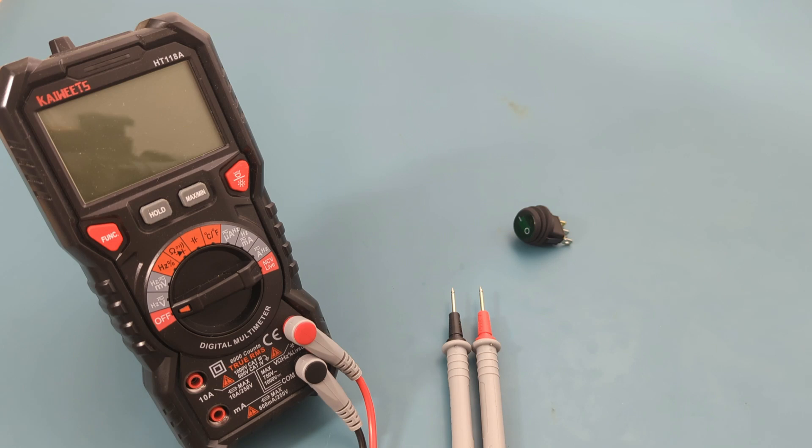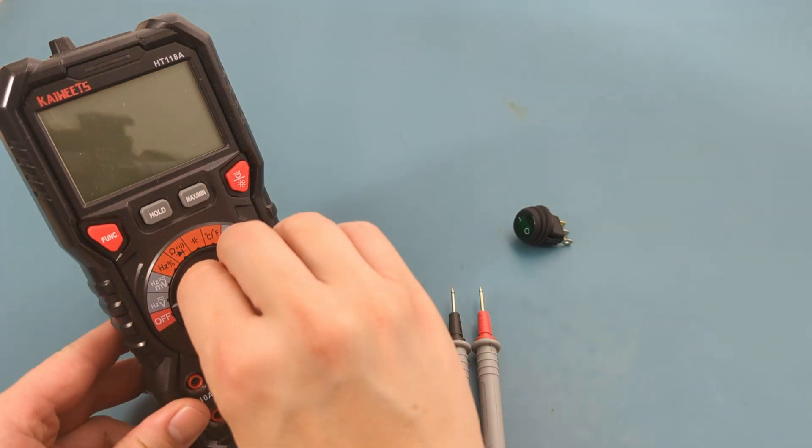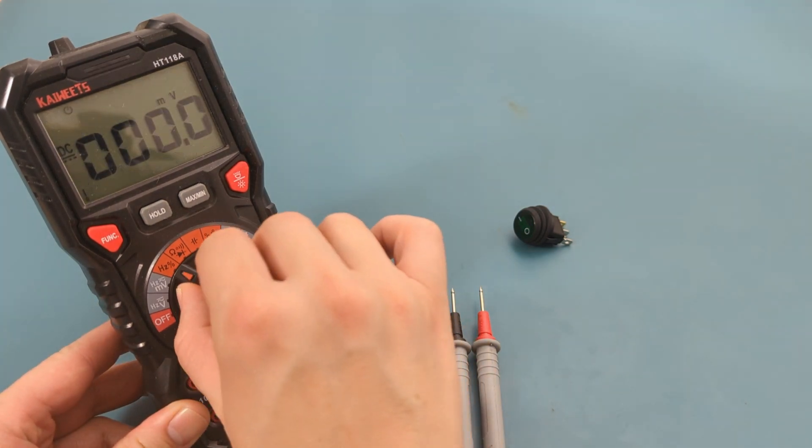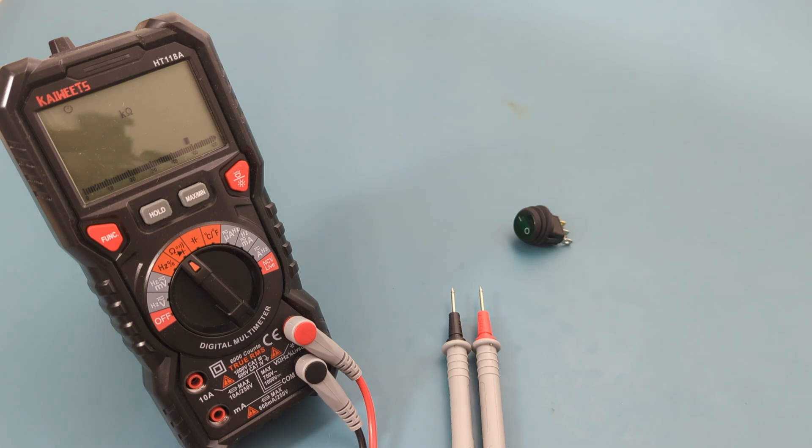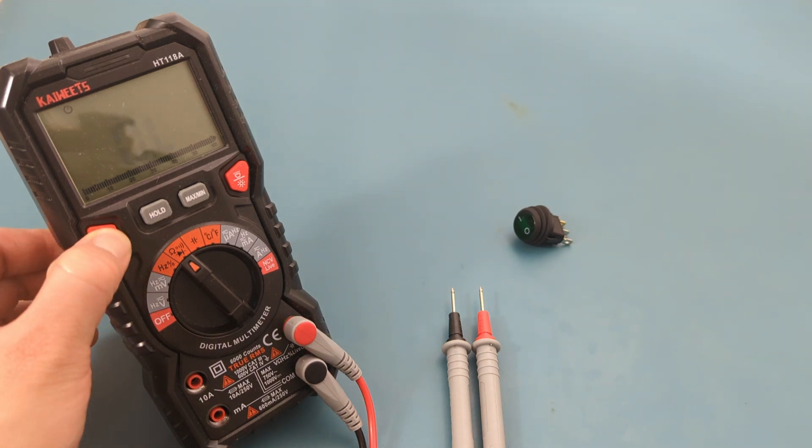To test for continuity, you can use a multimeter. Turn the dial to the resistance and continuity setting. Press the function button to toggle to the continuity mode.